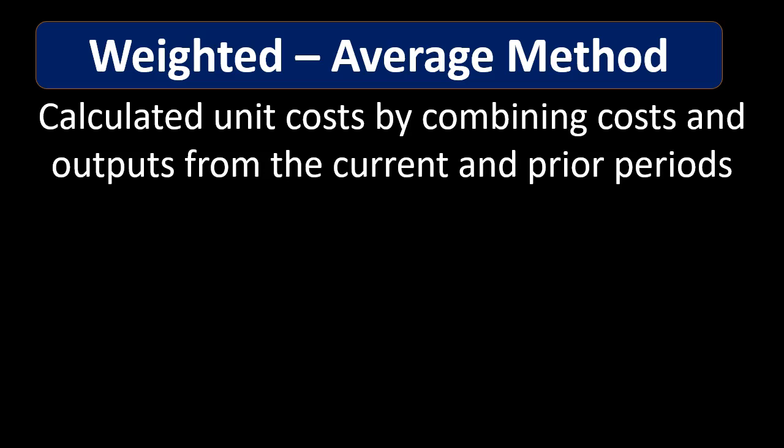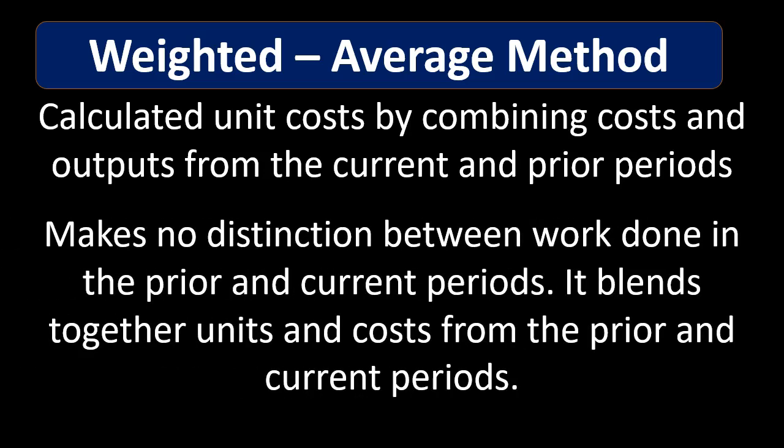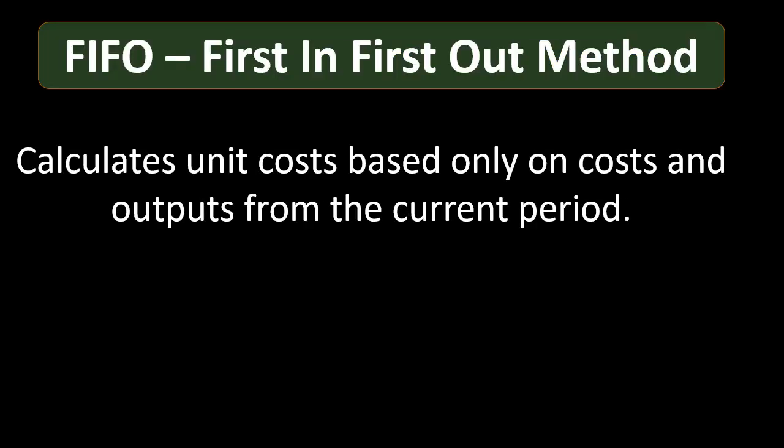The weighted average method calculates unit cost by combining costs and outputs from the current and prior periods. It makes no distinction between work done in the prior and current periods — it blends together the units and costs from both periods. Because of this blending process, not making a distinct cutoff between the prior period and the current period, the weighted average method is often a little bit easier, if not quite as precise, and that is one reason to use it versus the first in first out method.